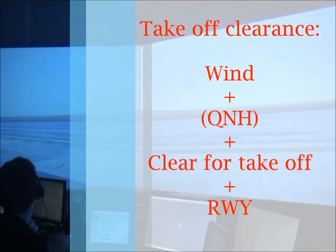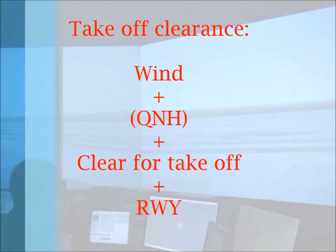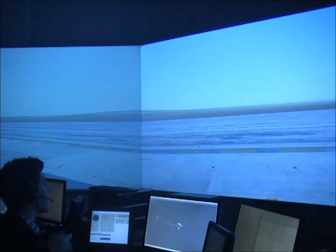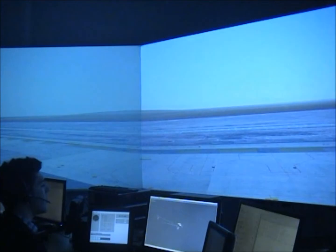Once the pilot is ready for departure, the controller is going to clear the aircraft for takeoff. It should be done by indicating the wind, QNH if necessary, then clear for takeoff and the runway. "Air France 325, wind 180, 05 knots, QNH 1011, clear for takeoff, runway 10." "Air France 325, clear for takeoff, runway 10, Air France 325."